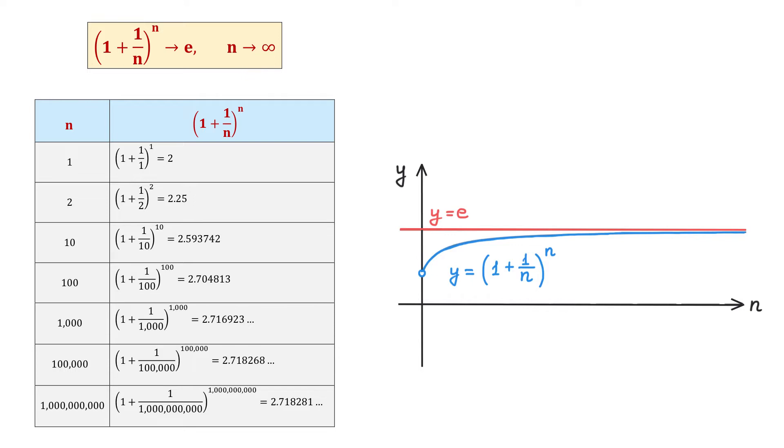In the table below, we see how the value of this expression changes when n increases in value. In the first row, when we replace n with 1, then the value of the expression will be 2. But when we replace n with 2, the value of the expression is 2.25.